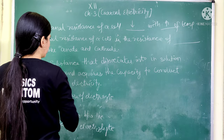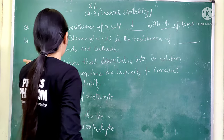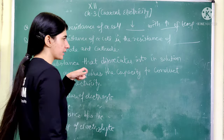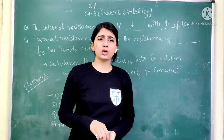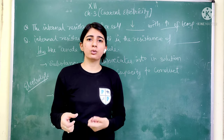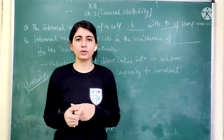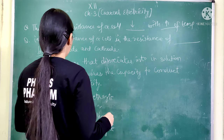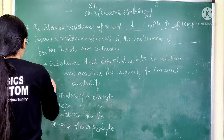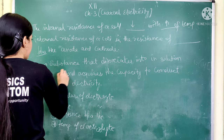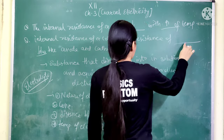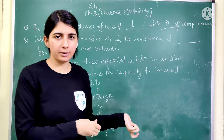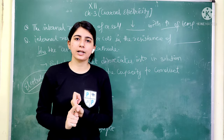The internal resistance of a cell is the resistance between the anode and the cathode. The next important question is: what does the internal resistance of a cell depend on, or what denotes internal resistance between anode and cathode? The answer is electrolyte.